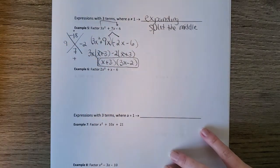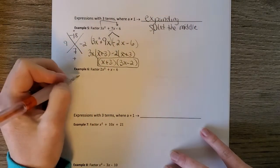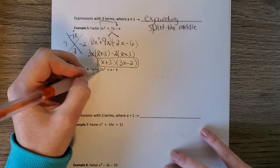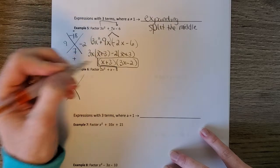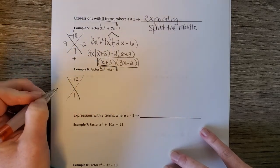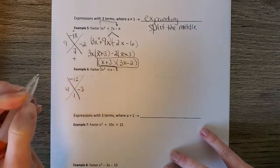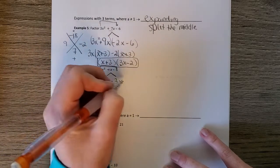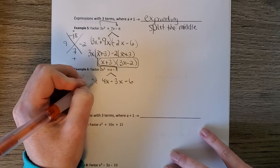And then for number 6, again, we're going to do split the middle. So we make our x. This is because, again, a, the leading term, is greater than 1 or not equal to 1. So we get negative 12. And then we have 1. So 4 and negative 3. So 4x minus 3x will give me that 1. And then we have 2x squared.